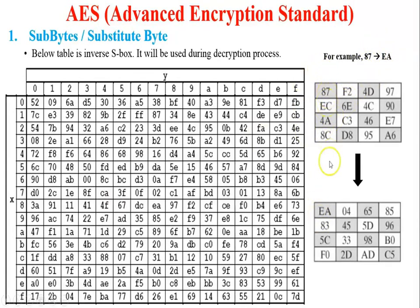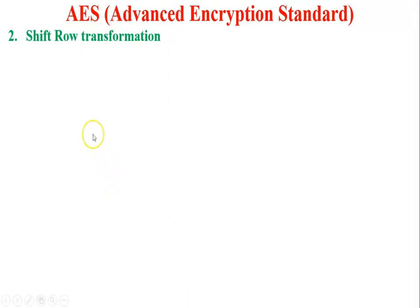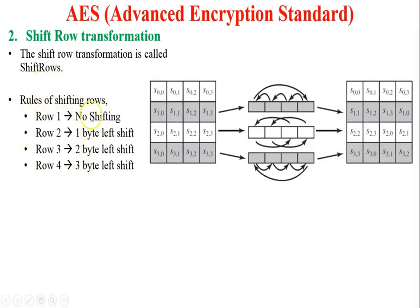For example, the hexadecimal value EA references row E and column A of the S-box, which contains the value 87 — so EA is mapped to 87. In the S-box table, find row E and column A: they intersect at 87, so EA is substituted by 87. Similarly, 04 uses row 0 and column 4, and is substituted by F2. Note: there was a typing mistake in the slide — the row is E (not 9) and the column is A (not 5).